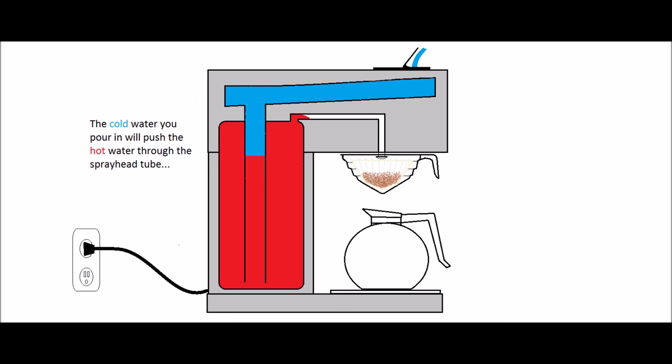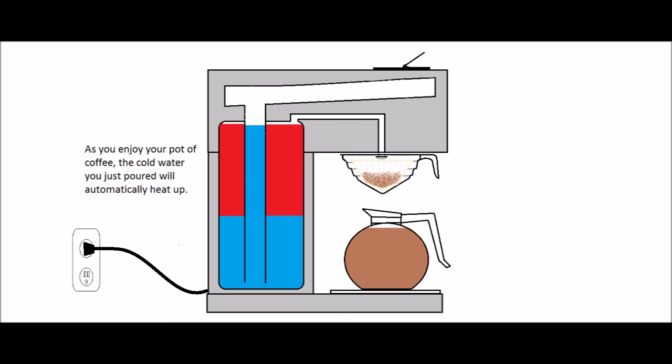Notice how the cold water comes in and is directed to the bottom of the brewer, pushing the hot water out and into the spray head, which in turn soaks the coffee grounds and eventually runs through the brew basket and into the pot below. The same way your water was heated the first time, the cold water you just poured in will also be heated.